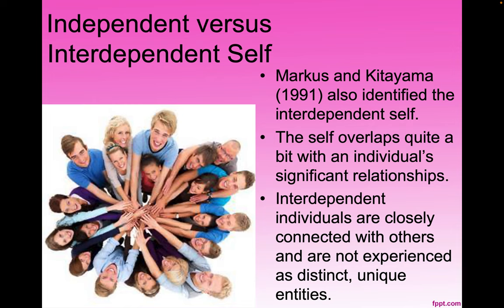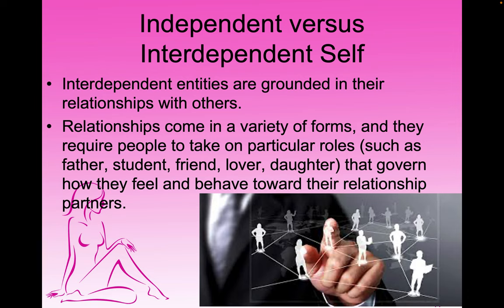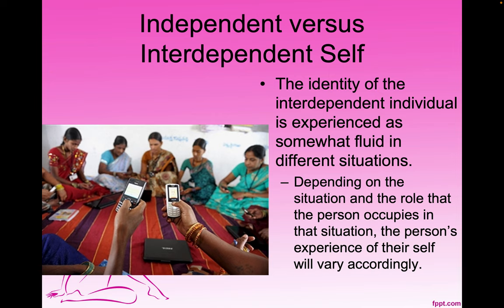Markus and Kitayama in 1991 also identified the interdependent self. The self overlaps quite a bit with an individual's significant relationships. Interdependent individuals are closely connected with others and are not experienced as distinct, unique entities. Interdependent entities are grounded in their relationships, and relationships require people to take on particular roles — such as father, student, friend, lover, daughter — that govern how they feel and behave toward their relationship partners. The identity of the interdependent individual is experienced as somewhat fluid in different situations, varying based on the role the person occupies.